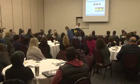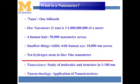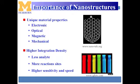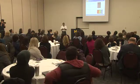We're going to see what nano is all about. Nano is one billionth of a meter. A human hair is 5,000 nanometers across; the smallest things we can see visibly are 10,000 nanometers across. Nanoscience is the study of anything between 1 to 100 nanometers, and the application of nanostructures is called nanotechnology. Once you go into that small regime, materials start behaving in different ways — you can have unique electrical, optical, magnetic, and other properties. You need fewer analytes, more reaction sites, and you can generate highly sensitive devices.